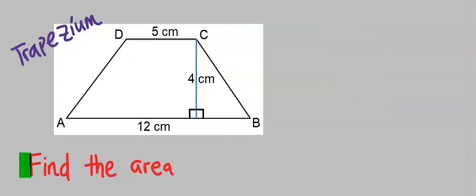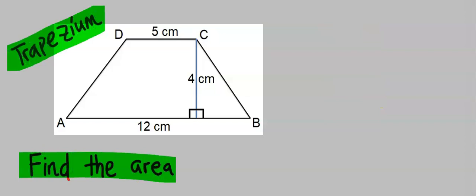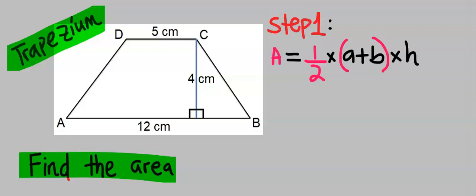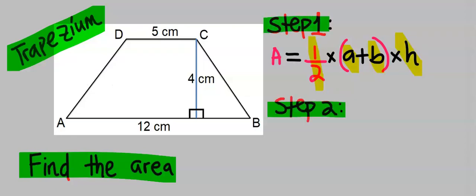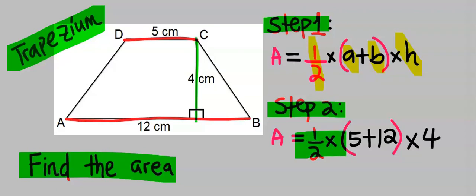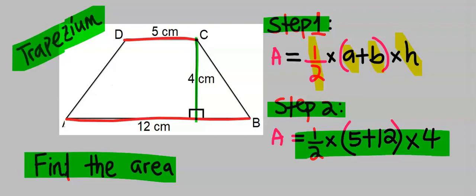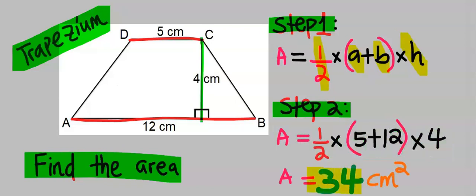In this question, we are going to find the area of this trapezium. Step one: write out the formula, which is 1/2 multiplied by the sum of the two parallel sides, multiplied by the height. Step two: substitute the values. The two parallel sides are 5 and 12, and the height is 4. Our answer is 34 cm squared.